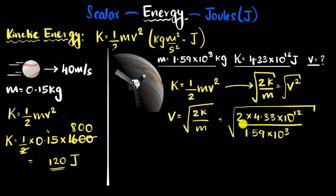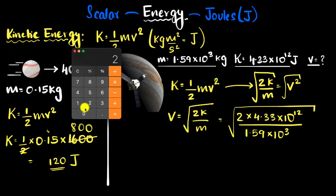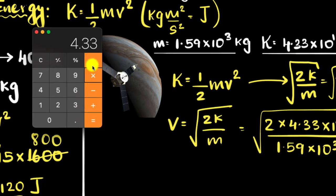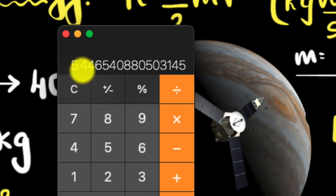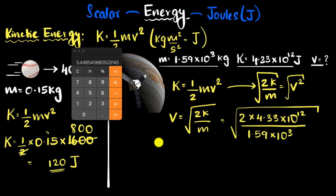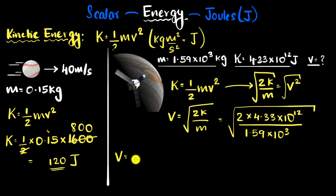The first thing I do is I simplify this. I'll take my calculator and do that. So 2 multiplied by 4.33, I'll ignore the 10 powers for now, divided by 1.59. That gives me 5.45. So v equals square root of 5.45 times 10 to the power - well, 10 to the power 12 divided by 10 to the power 3 is 10 to the power 12 minus 3, which is 10 to the power 9.